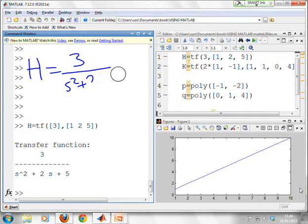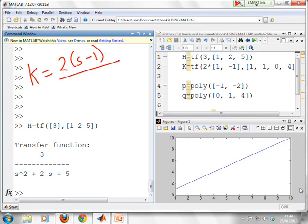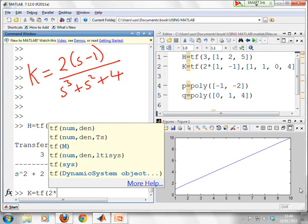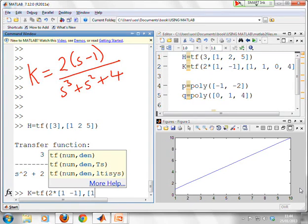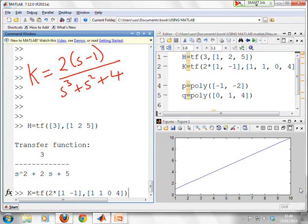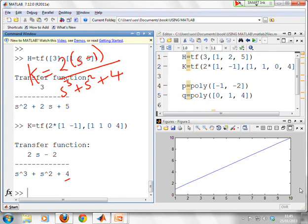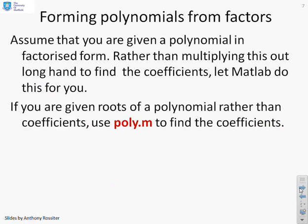I'm just going to delete this bit because I want to now do a different example. So let's say I want to do k equals 2 times (s minus 1) divided by s^3 plus s^2 plus 4. So how am I going to do that? You can see k equals tf. That's the standard command. Now what's the numerator? The numerator is 2 times (1, -1). And what is the denominator? You'll see it's 1 for the s cubed, 1 for the s squared, 0 for the s, and 4 for the constant. There we go. Press return. And again, you'll see we've got exactly what we expected.